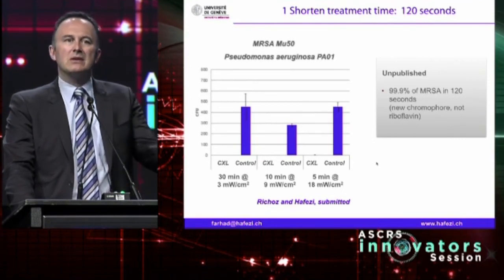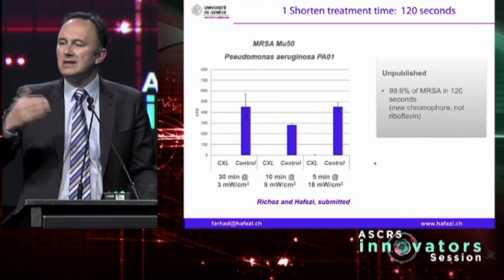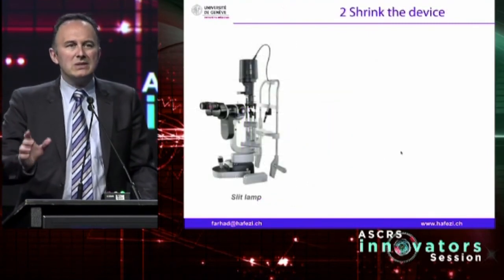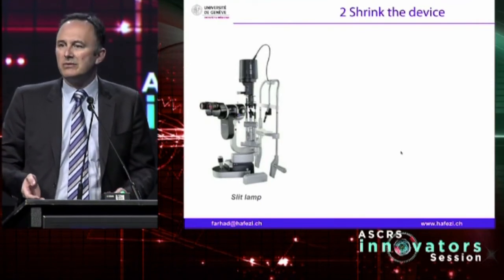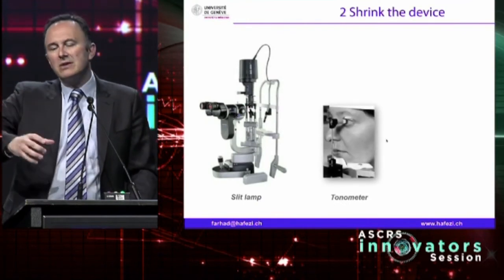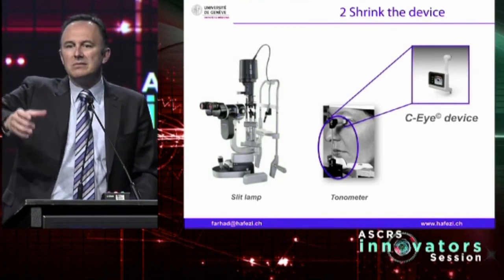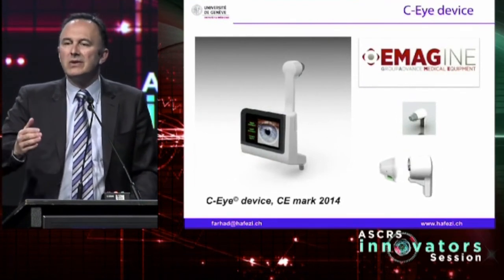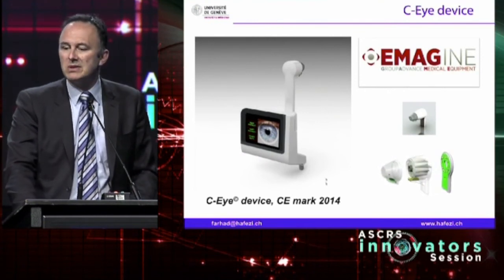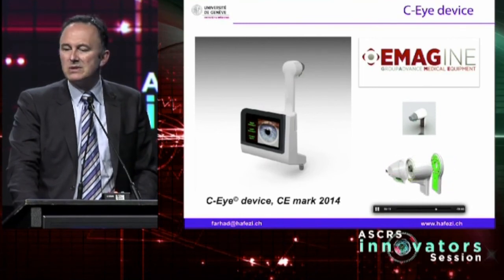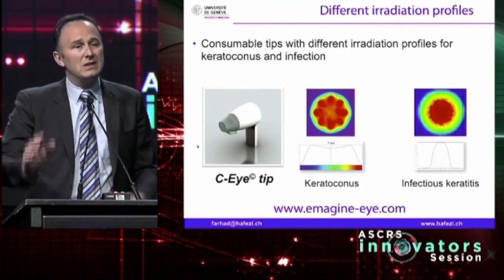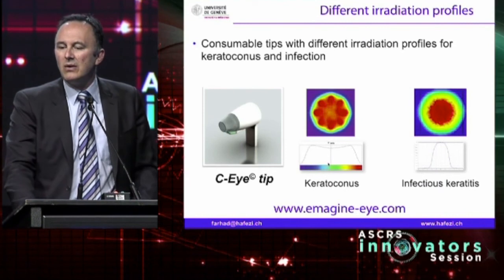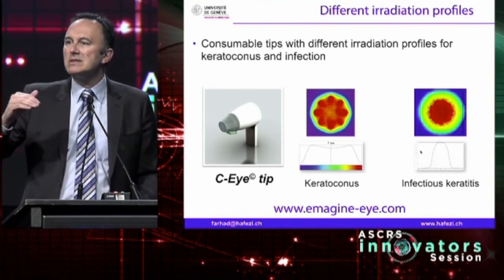The second aspect is to take this out of the operating theater. Why would you take a septic patient into a sterile environment, kill 99% of the pathogen within two minutes, and then take him out again? The slit lamp is defining our profession, and it has a Goldmann tonometer. So why not replace the Goldmann with a device that allows you to do the treatment at the slit lamp? We are currently working on a machine that delivers all the intensities used for keratoconus treatment but also for infectious keratitis treatment. It has a sterile replaceable tip containing a lens system that allows either a keratoconus treatment with more energy in the corneal periphery, or an adapted irradiation profile optimized for infectious treatment.